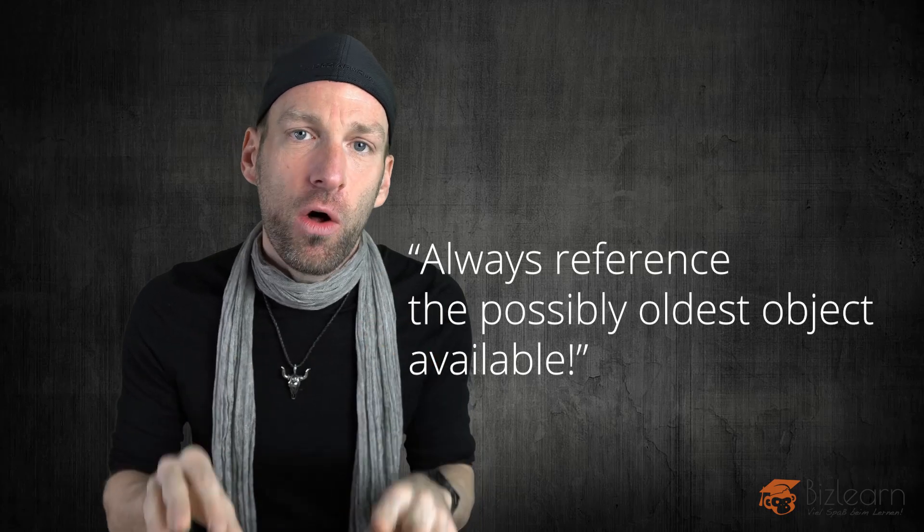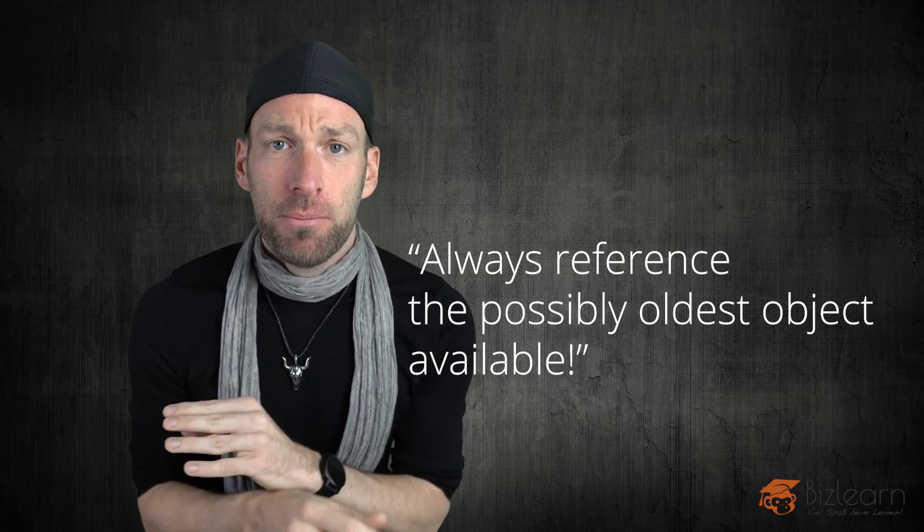What is horizontal modeling? As I mentioned before it's following one rule. Always create a relation to the possibly oldest object available. But what is an object? Well everything is an object which you see in the graphic area. And everything which you see in the part navigator is an object as well.